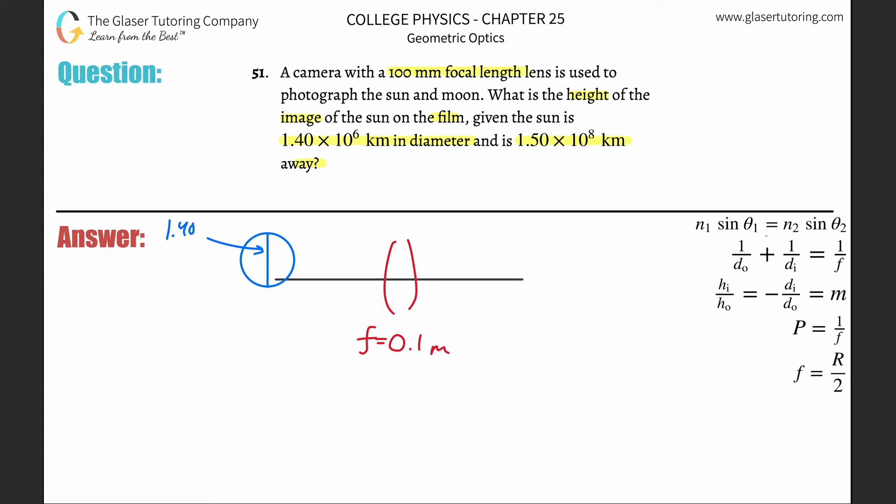It also tells us how far it is away, so this horizontal distance to the lens is the object distance, because the sun is an actual object. This is 1.5 times 10 to the 11th. You've got to add 3 basically, and this is in meters.